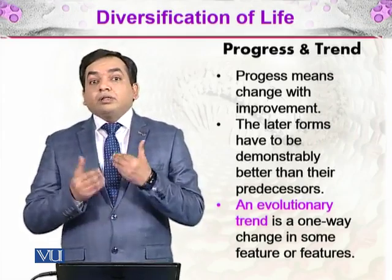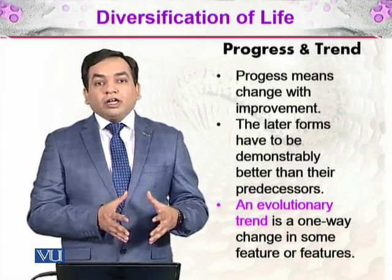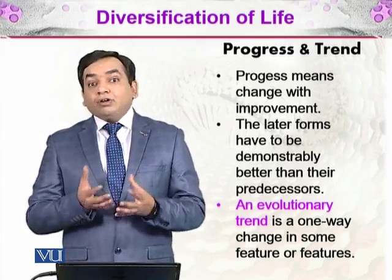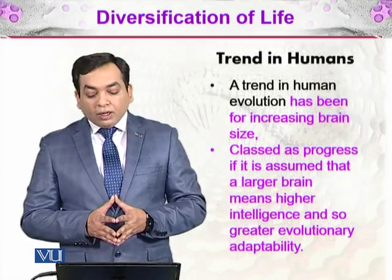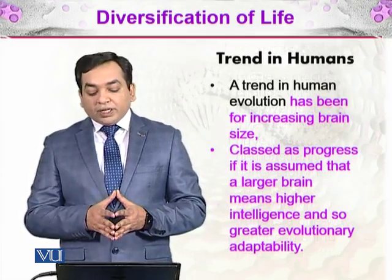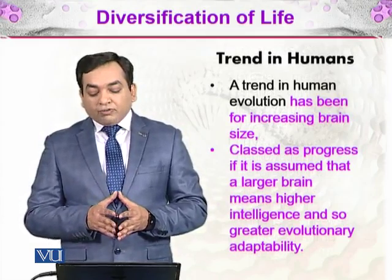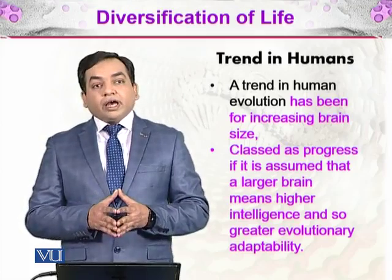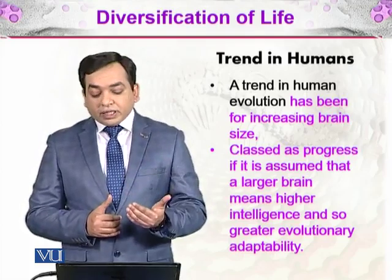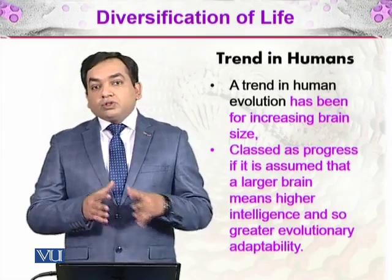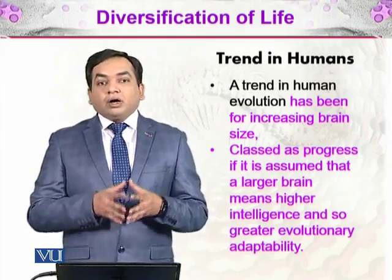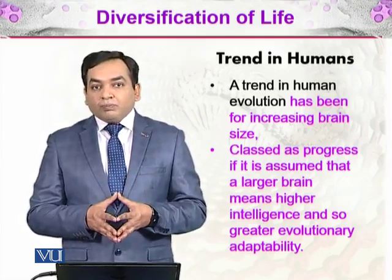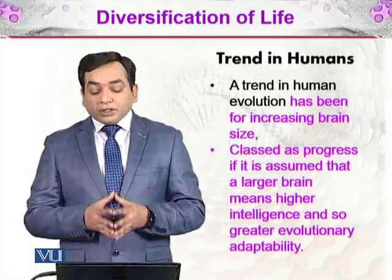For example, take the human brain. Earlier apes did not have such a developed brain, but today we have a much more advanced and conscious brain. A trend in human evolution has been the increasing brain size, and it is classed as progress if we assume that a larger brain means higher intelligence and greater evolutionary adaptability. So a larger brain is a progress because early apes did not have an advanced brain, but we have been progressing in the course of evolution and now have a much more advanced brain.